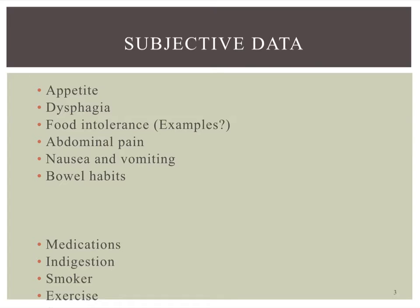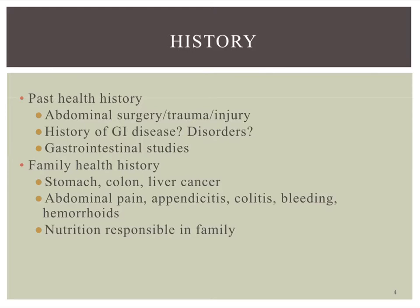If you look in your book in the subjective section, it gives you examples under each topic. After asking what brings them in, go into their past medical and health history. Have they ever had surgery? Do they have any diagnosed GI diseases? GI could be anything from peptic ulcers to GERD to IBS or Crohn's. They could have had something as simple as gallbladder removal or appendicitis, or a colon resection. Also don't forget things like UTI, kidney stones, hepatitis A or B, and cirrhosis of the liver — all of that falls under GI disorders and diseases.